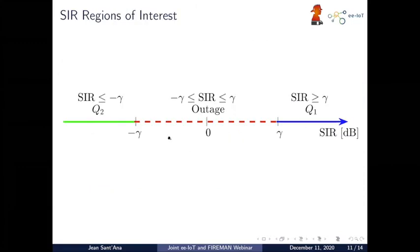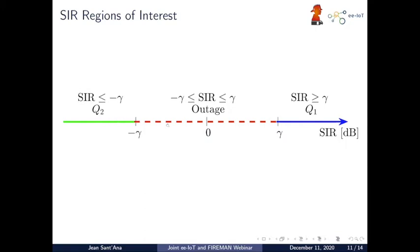This is the SIR regions of interest for a successful reception. The blue area is the traditional one: when SIR is above the gamma threshold, we can decode the packet. Now we are exploiting this green area: when the SIR is below negative gamma and we have only two packets colliding, we can also exploit this region. Whenever gamma is bigger, we have a smaller effect from our proposed scheme because this green area will be smaller, but whenever gamma is very low, we might see better results.